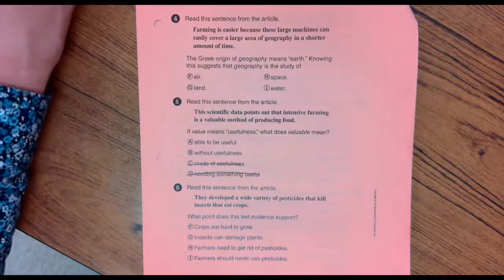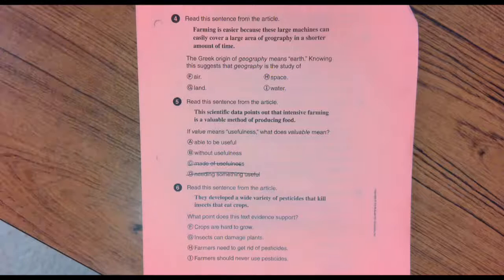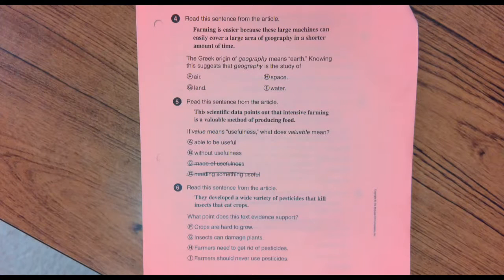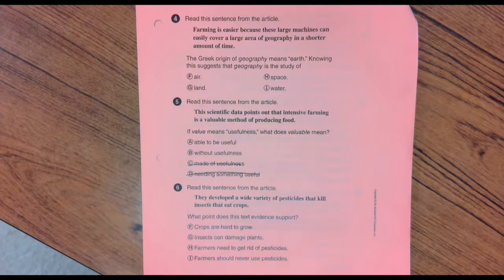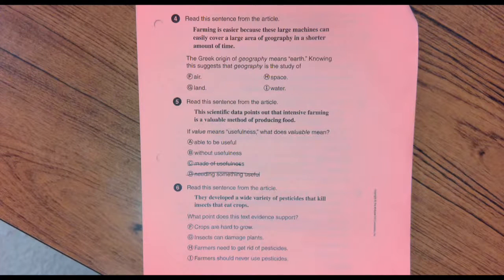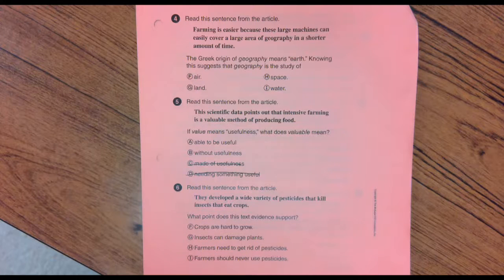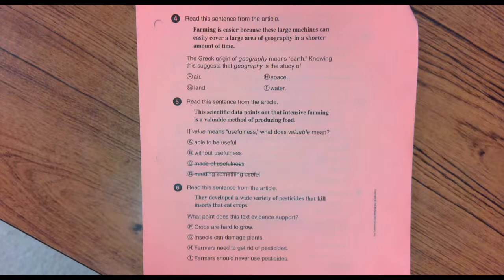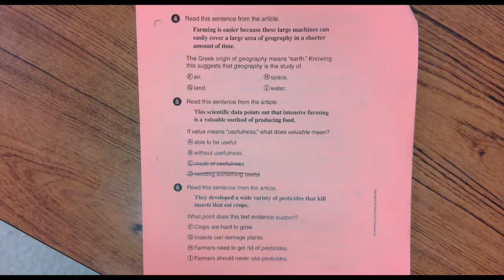Number six. Read this sentence from the article. They develop a wide variety of pesticides that kills insects that eat crops. What point does this text evidence support? Crops are hard to grow. Insects can damage plants. Farmers need to get rid of pesticides. Farmers should never use pesticides.